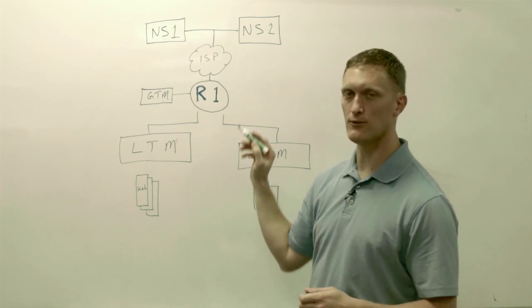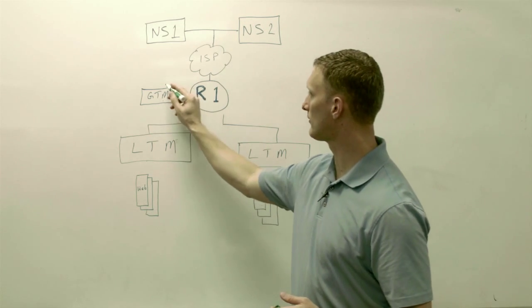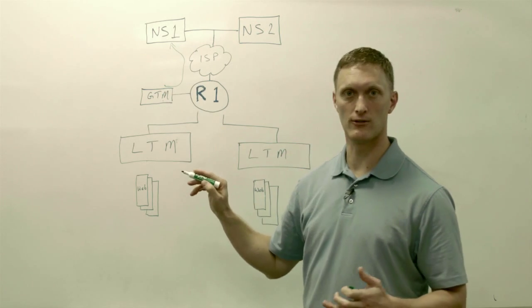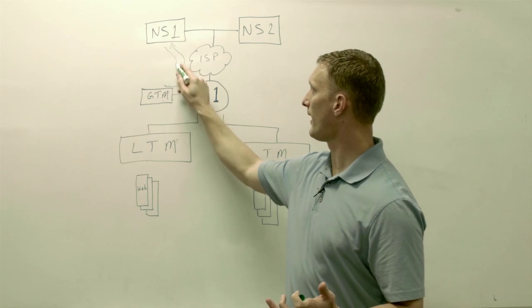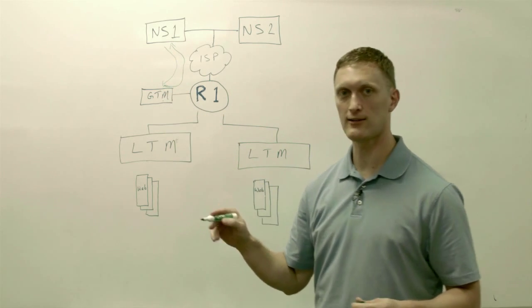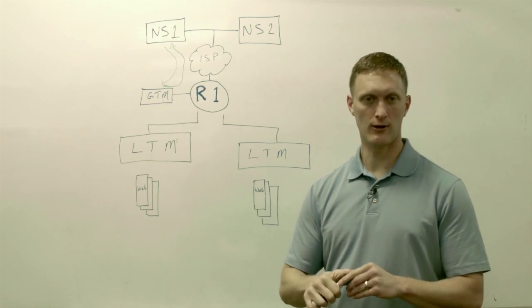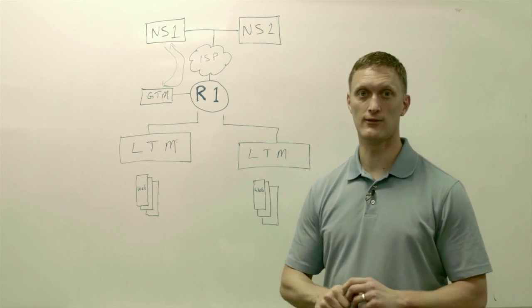Let's say you put a path check monitor on this GTM right here and it's going to go out and check to see if one of these name servers is available. It's going to flow through the router, ISP, up to this name server, and if it gets a response back like it expects, then it knows that the path to that name server is available.